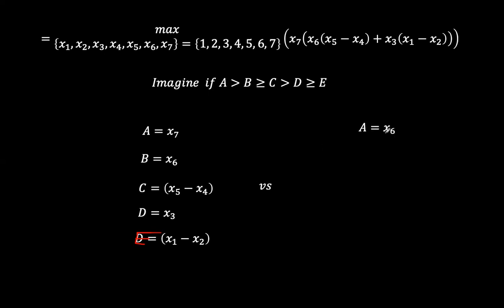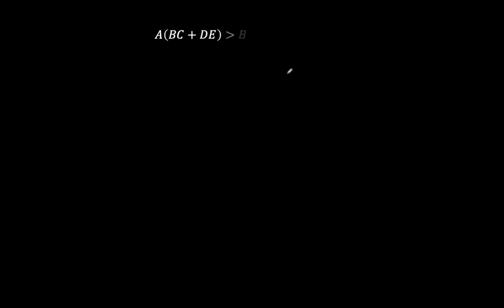Versus when a is x6, and b is x7, and c is x5 minus x4, d is x3, and e is x2 minus x1. So we're trying to see in the possibilities that we do have here, if you make x7 the maximum, or you instead shift the maximum value to be x6, what will the expression be?